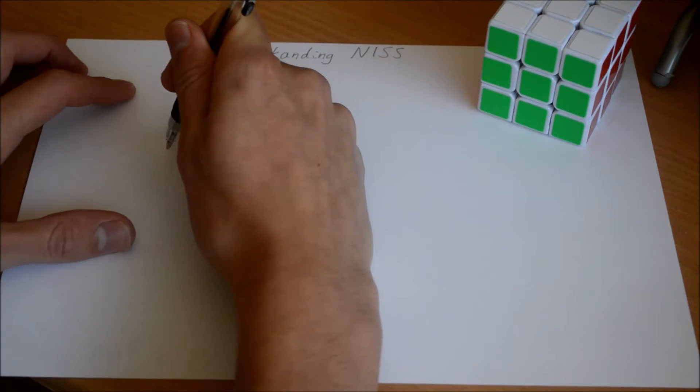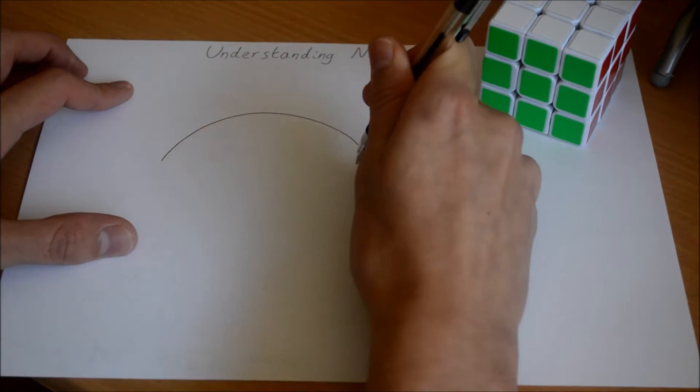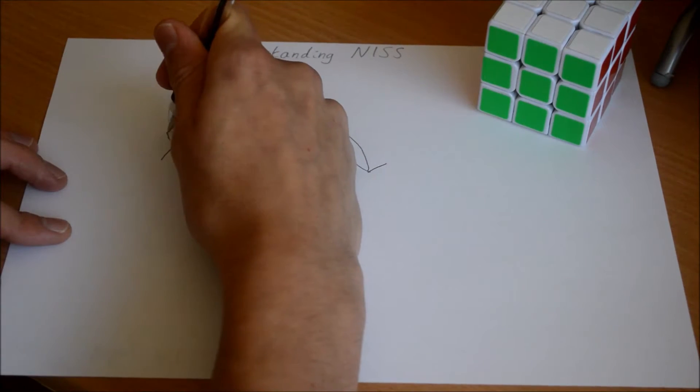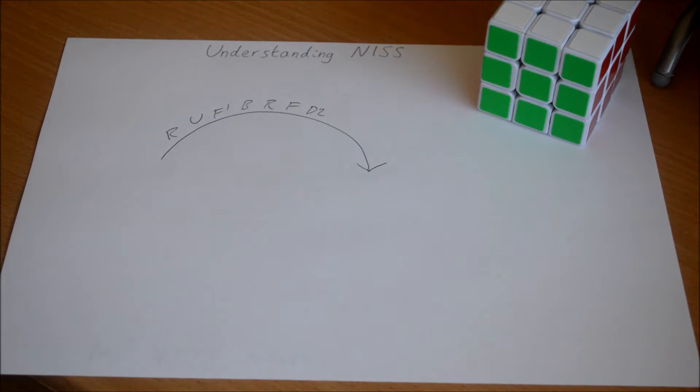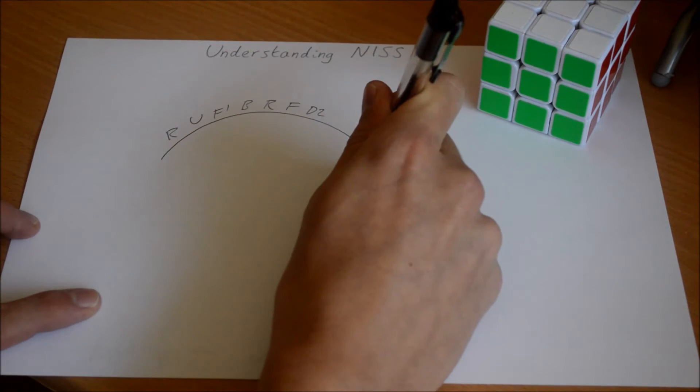So you have your scramble and you scramble r u f' whatever, and you're looking to find the solution called solution x.